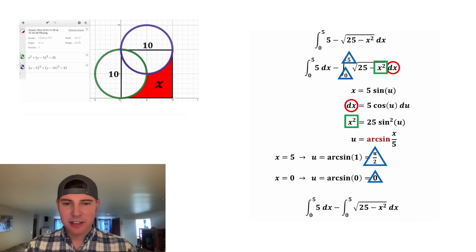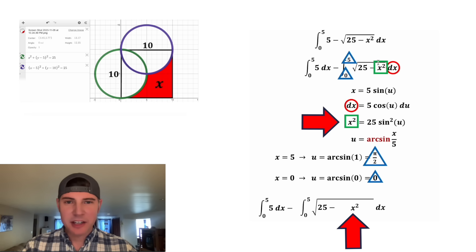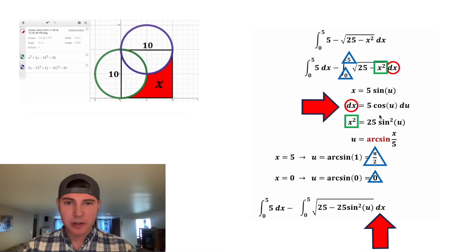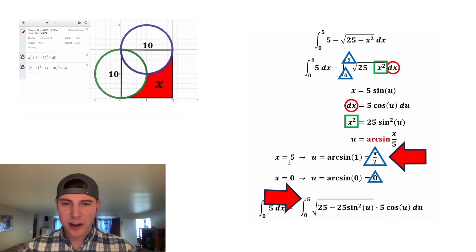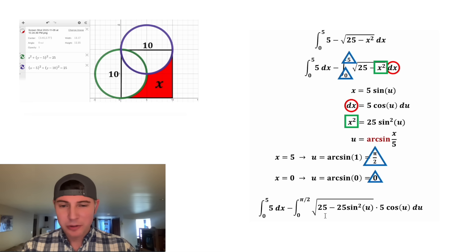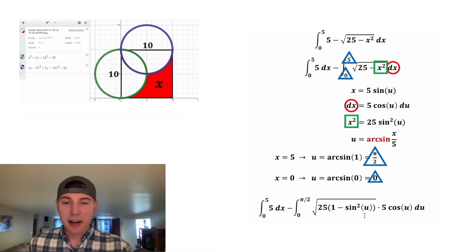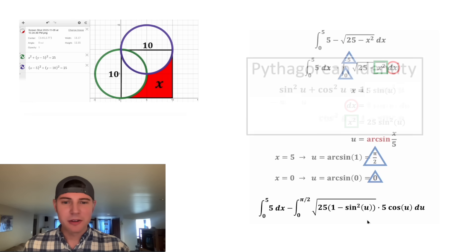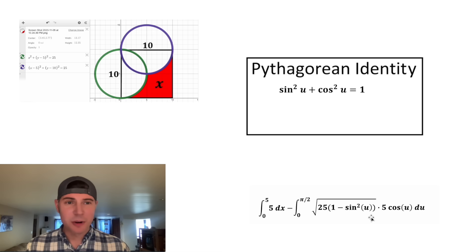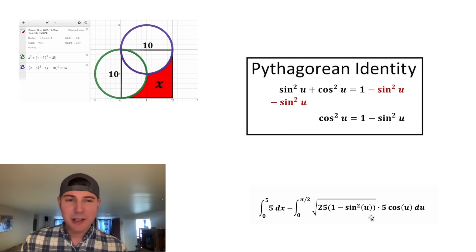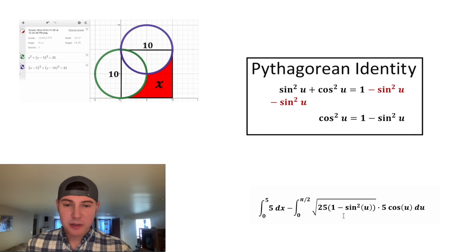Now we substitute: replace x squared with 25 sine squared u, replace dx with 5 cosine u du, and use pi over 2 and 0 as our limits. Under the square root, both terms have a 25 so we factor that out, leaving 1 minus sine squared u inside the parentheses. Using the Pythagorean identity — sine squared plus cosine squared equals 1 — we see that 1 minus sine squared u equals cosine squared u, so we replace it with cosine squared u.